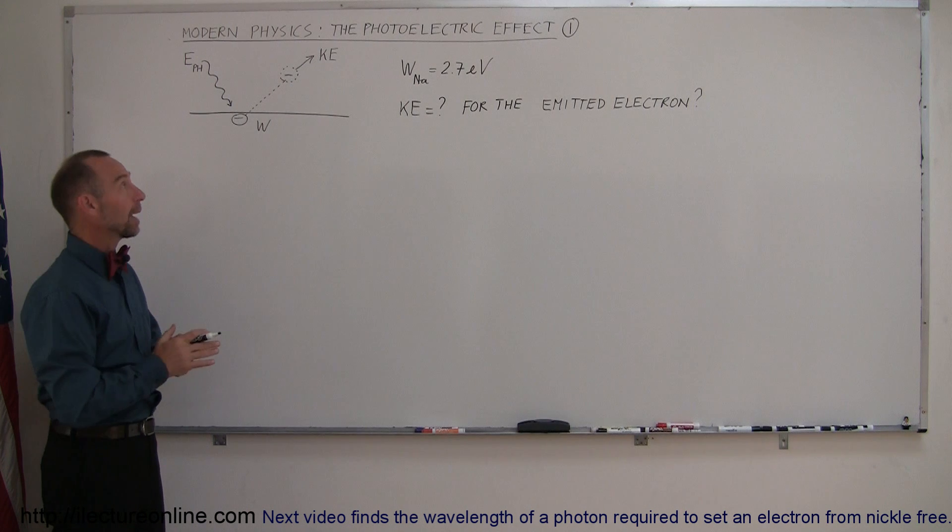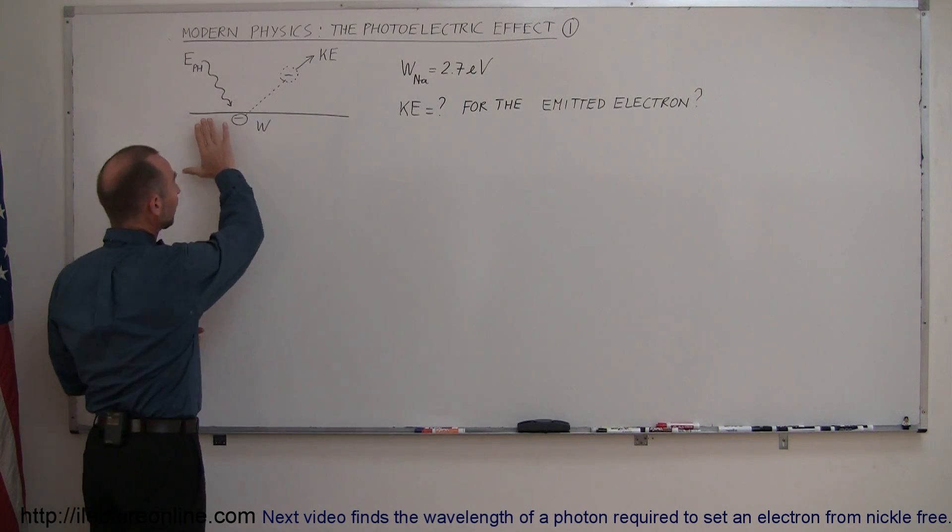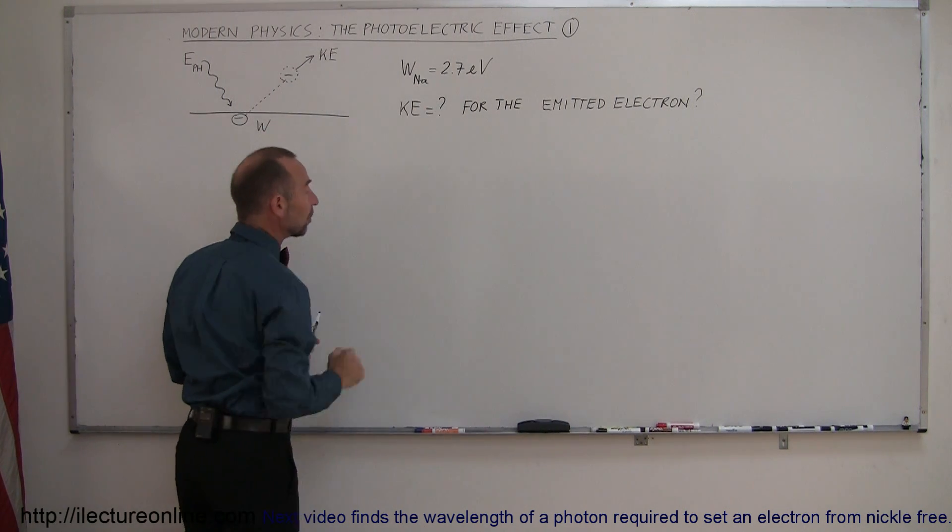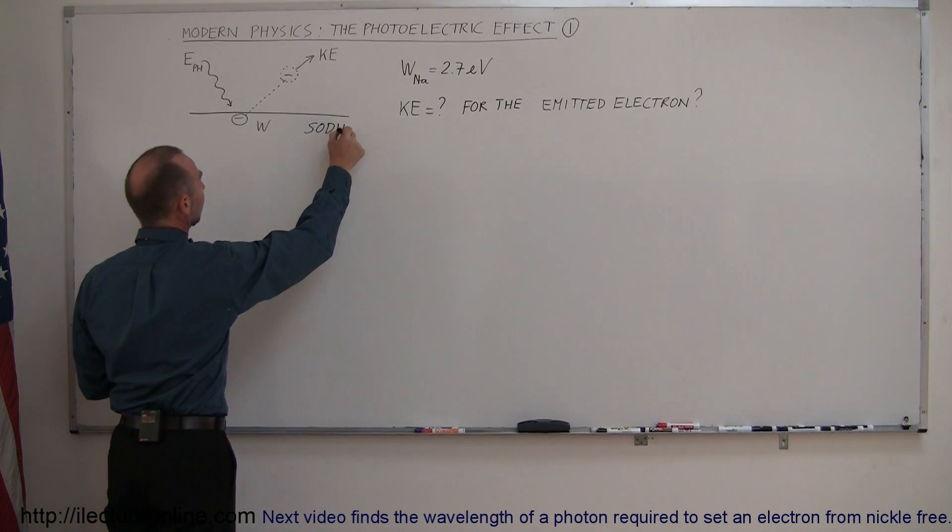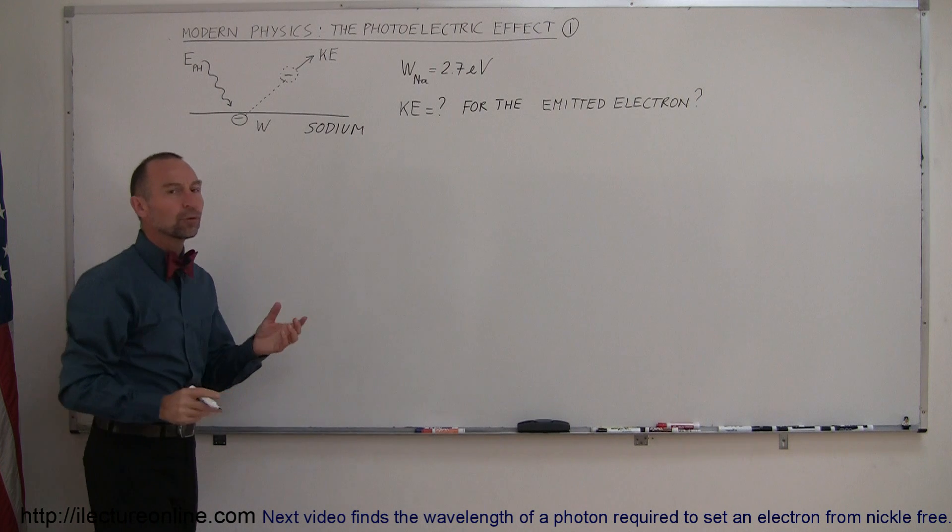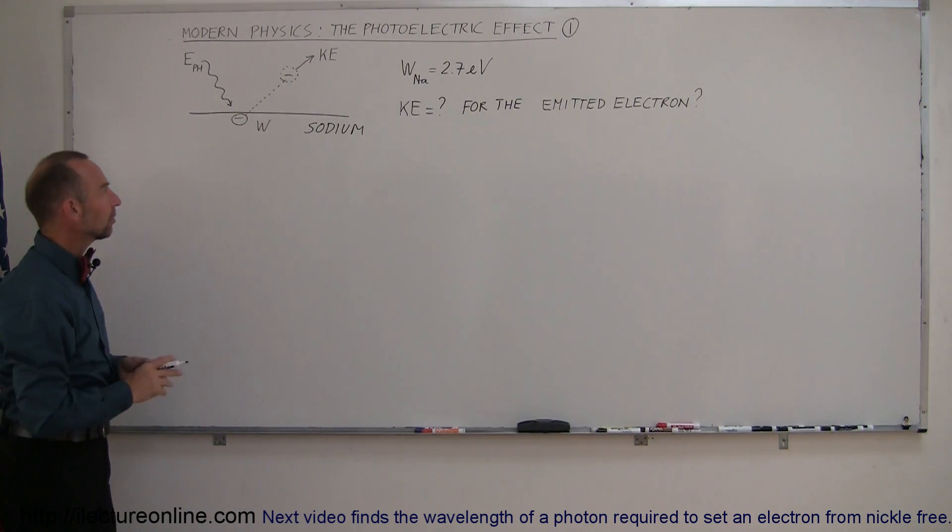So what this is all about is, when you have a metal, in this case we're going to assume the metal is sodium. Sodium, of course, will have free electrons. Electrons are easily removed, they easily go from one atom to the next.